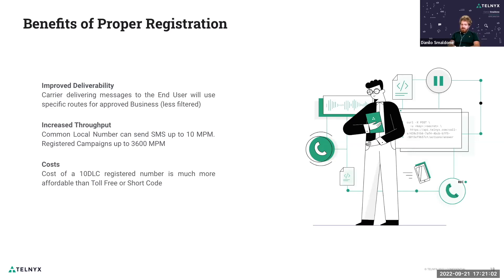What are the benefits of a proper registration? First, improved deliverability — brands that are properly registered will access specific routes with fewer filters than non-registered or unregistered companies, which means a better user and company experience in terms of deliverability. Second, increased throughput: with a normal unregistered number you can scale up to 10 messages per minute, but with a full brand registration you can scale up to 3,600 messages per minute. And of course, cost: the registration fee and monthly recurring cost of a 10DLC number is very low, making it much more affordable than a short code, for instance.